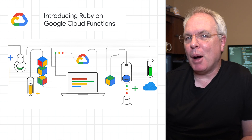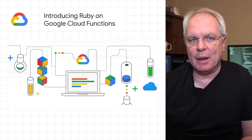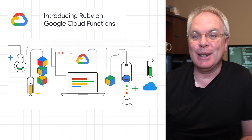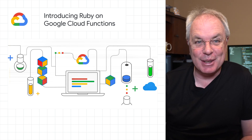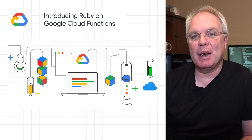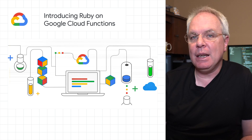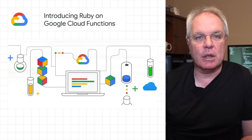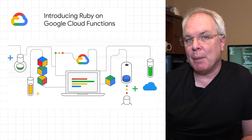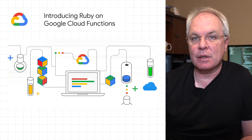Ruby, the popular general-purpose programming language, is now supported in Google Cloud Functions. With the functions framework for Ruby, you can write idiomatic Ruby functions to build business-critical applications and integration layers.